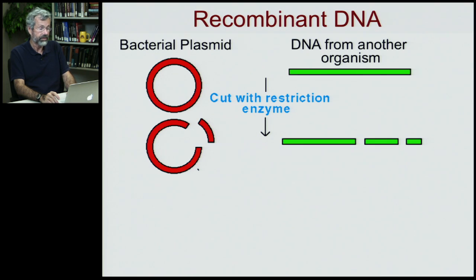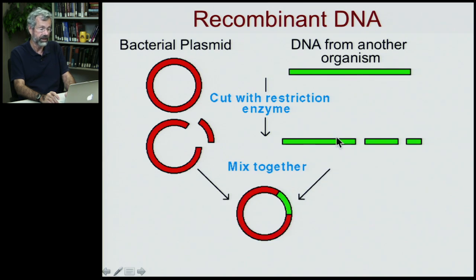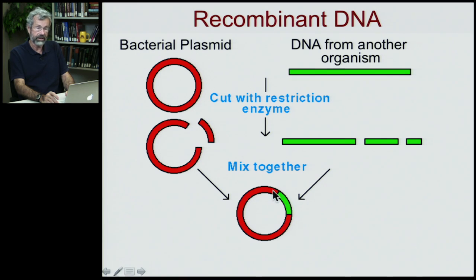Now, if we play around with the plasmids and chop them a bit, and we have in a flask with them a segment of DNA from a different organism that we're interested in, we can get the following crazy thing happening. The restriction enzyme will chop out a bit of the plasmid, so now it's got sticky ends on either end, and we've got the DNA from some other organism that we're interested in. And by chance, with billions and billions of these in a flask, every now and then there will be some that line up with a particular region of DNA from a different organism that's now in the plasmid.